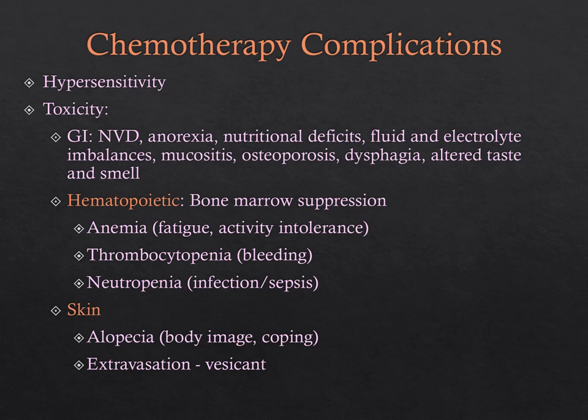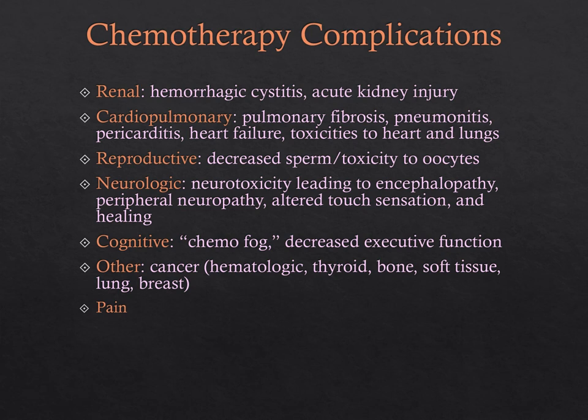It's extremely important to monitor for and promptly recognize chemotherapy complications: hypersensitivity reactions, toxicity, bone marrow suppression, extravasation, and alopecia. Chemotherapy can also affect our kidneys, cardiopulmonary systems, reproductive system, and neurologic system — because it doesn't just affect malignant cells, it can kill normal healthy cells too, affecting our whole body systems systematically.